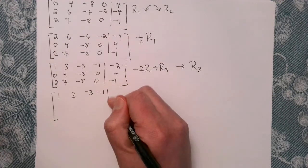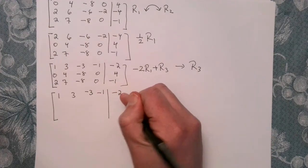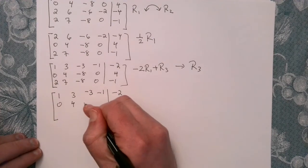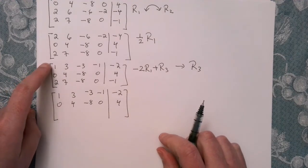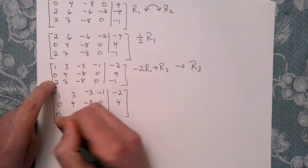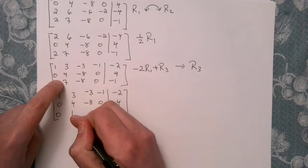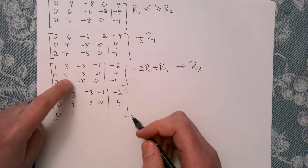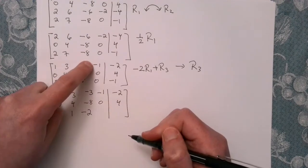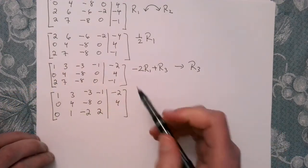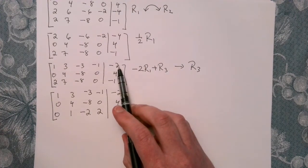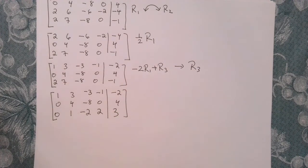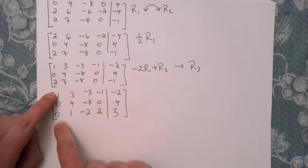Row one stays the same and row two stays the same — it's row three that's changing. For row 3: minus 2 plus 2, minus 6 plus 7, 6 minus 8, 2 plus 0, and 4 minus 1. We've got our pivot and cleared out all the entries underneath it.